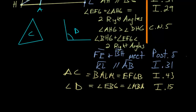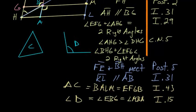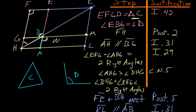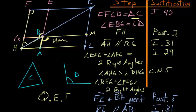So in essence, we have constructed a parallelogram that contains the angle we started with, is equal in area to the given triangle, and is built on line AB. We've met all the conditions for our construction, so we can end with QEF.